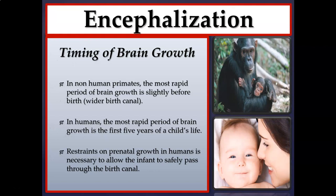In non-human primates, the most rapid period of brain growth is slightly before birth, consistent with a wider birth canal. In humans, the brain size of a developing baby is somewhat limited in utero — if the baby's head gets too large it becomes more difficult to pass through the birth canal. So in humans, the most rapid period of brain growth is actually the first five years of life, which is why toddlers look top-heavy with heads growing faster than their bodies. There are restraints on prenatal growth in humans to allow the infant to safely pass through the birth canal.